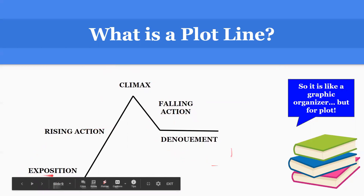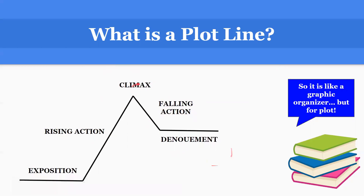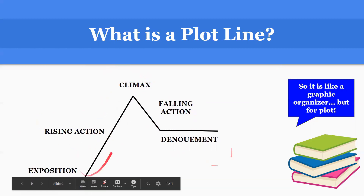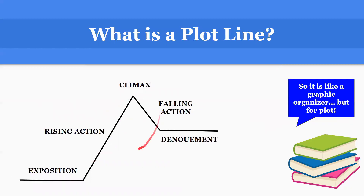As you can see, the exposition goes for a little bit, the rising action is the longest, the climax is just a little bit of the story, the falling action goes down from there, and then the denouement ends the story. The key thing here is that the rising action is the longest — it builds up the story to get to the climax, which is the exciting part of the story.